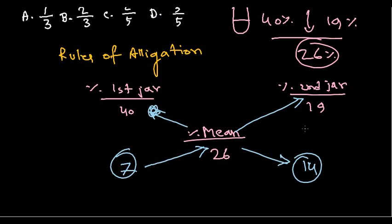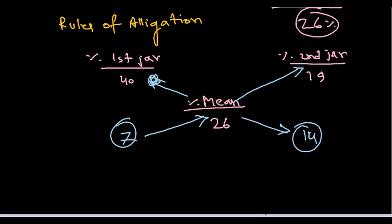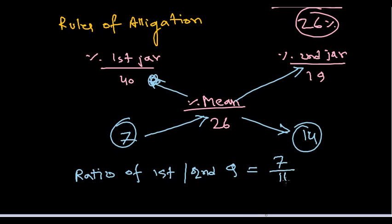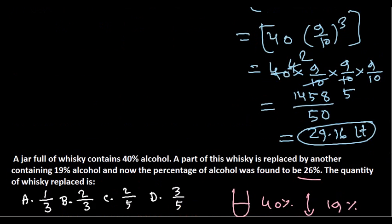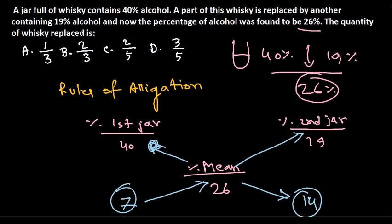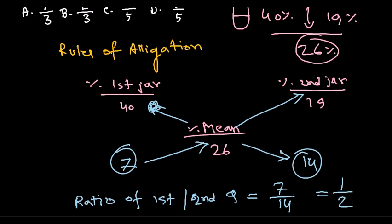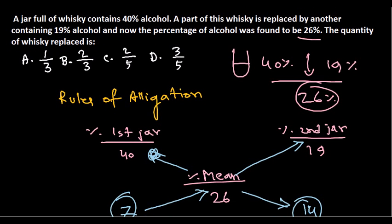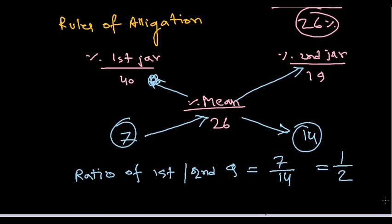The ratio of the first and second quantities will be 7 to 14, which simplifies to 1 to 2. So the ratio of the quantity remaining to the quantity replaced is 1 to 2.